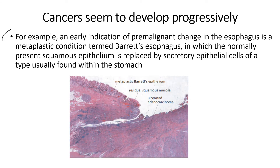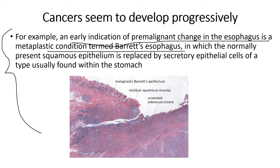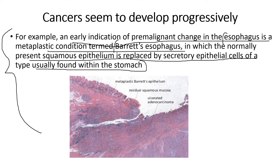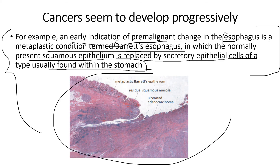An early indication of pre-malignant change in the esophagus is a metaplastic condition termed Barrett's esophagus, in which the normal squamous epithelium is replaced by secretory epithelial cells of the type usually found within the stomach. The epithelial cells present in the esophagus are replaced by cells found in the stomach, and the esophagus is now termed Barrett's esophagus. Here in the picture, the cells of the squamous epithelium are visible.